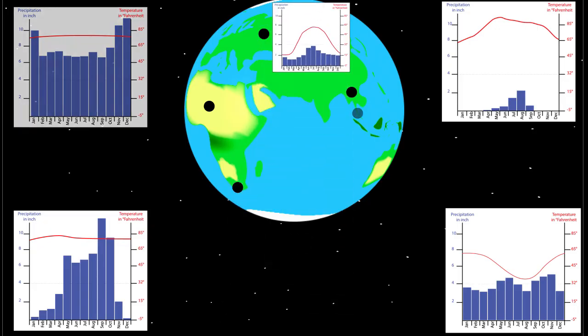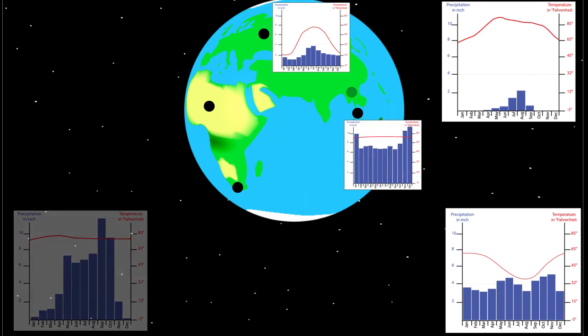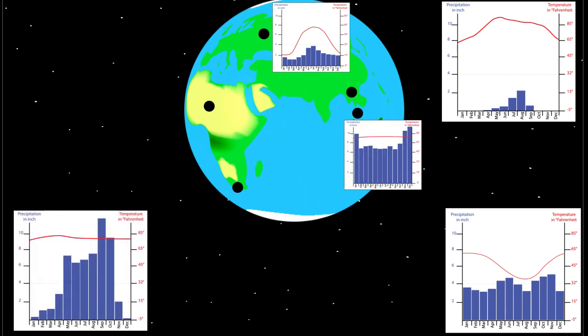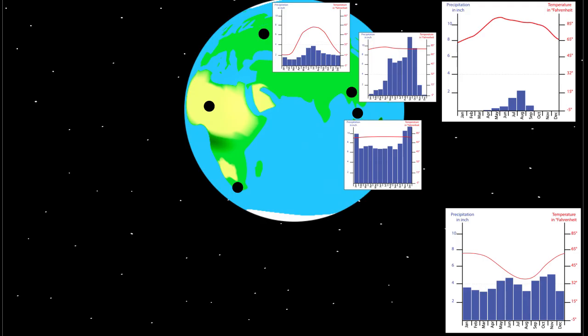At the equator it is warm and there is a lot of precipitation. At a small distance from the equator it is warm and it has a rain and dry season. When we move further on from the equator we arrive at dry places. These are the deserts.